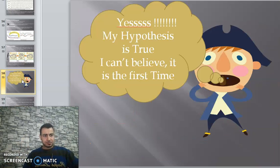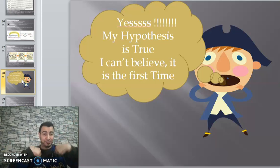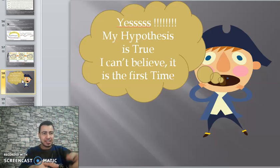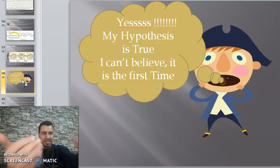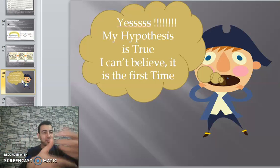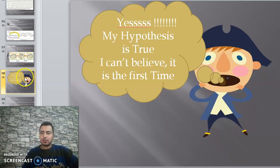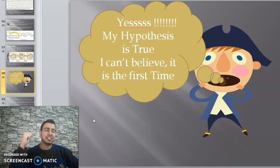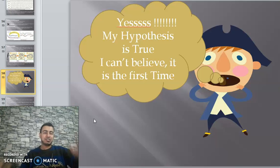Where do we get proteins from? From food. When you eat food, your digestive system digests proteins into amino acids, which go into the blood and are distributed to cells. Cells take the amino acids and convert them into their own proteins according to DNA and genetic information. Next time we will talk about how DNA gives rise to protein.